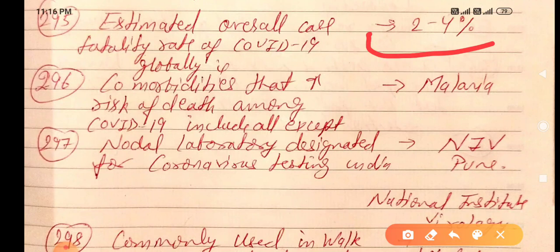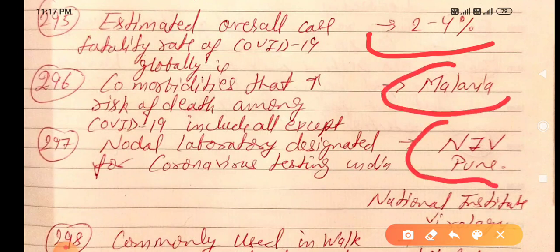Estimated overall case fatality rate of COVID-19 globally is 2 to 4 percent. Comorbidities that increase risk of death among COVID-19 patients include all except malaria — malaria is not included. The first comorbidity which increases the risk of death in COVID-19 is cardiovascular causes. Nodal laboratory designated for coronavirus testing in India is NIV — National Institute of Virology, Pune.